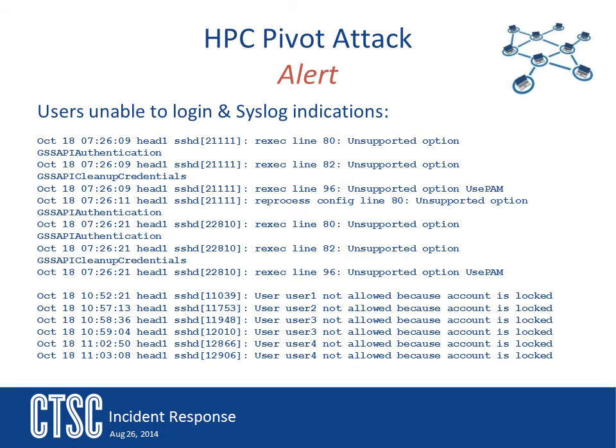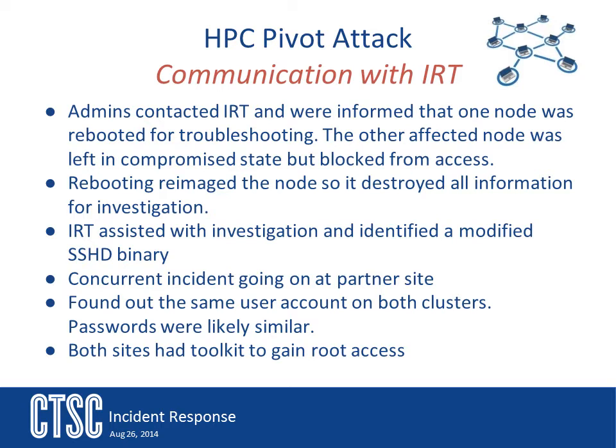The way their system works is that they have two head nodes, but they work off of an image. This image gets loaded from a different system — when a node is rebooted, a new image gets loaded onto the system. What happened was that one node got compromised and started having problems. The admins did a little investigation and decided to reboot the system, which then installed a new clean image on the node. At this point, users were able to get back onto the system and everything seemed fine.